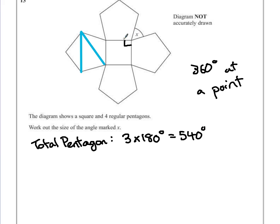So if we want to know what one of these is, each angle can be found by dividing 540 by 5. 5 into 5 is 1 with nothing remainder, 5 into 4 is 0 with 4 remainder, 5 into 40 is 8. So each angle in a regular pentagon is 108 degrees.